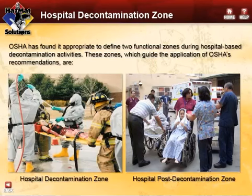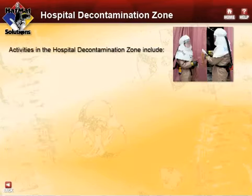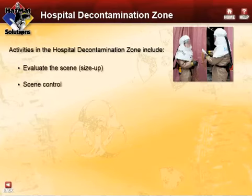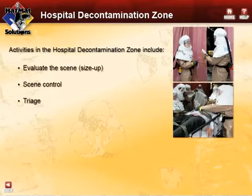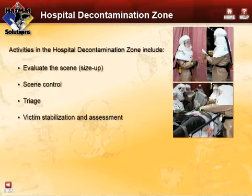These zones are sometimes referred to as the emergency treatment area for a mass casualty event. The hospital decontamination zone is used to evaluate the situation and control entry into the hospital. Decon team members will begin triage to distinguish contaminated individuals from other patients arriving at the hospital. Victims who require immediate stabilization before they enter the decon system will be assessed in the emergency treatment area. The decon team members will identify injuries that will require special handling inside the decon system.